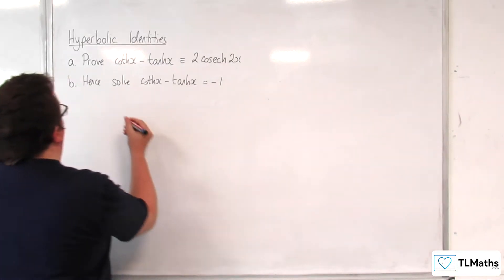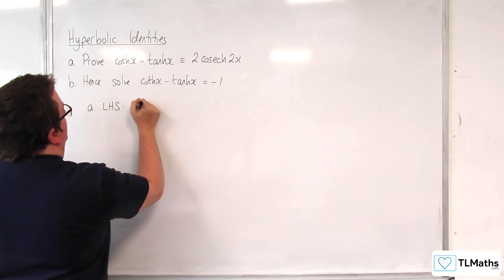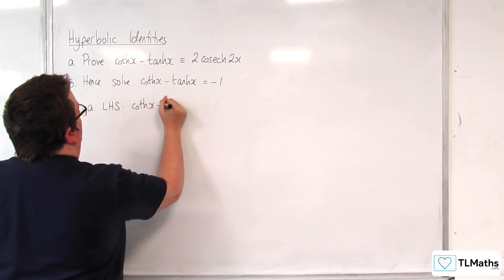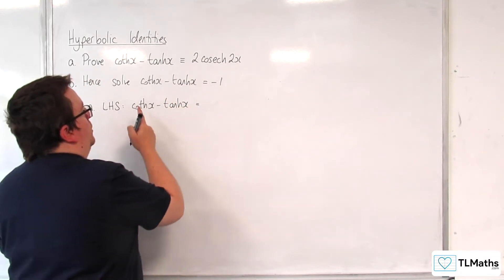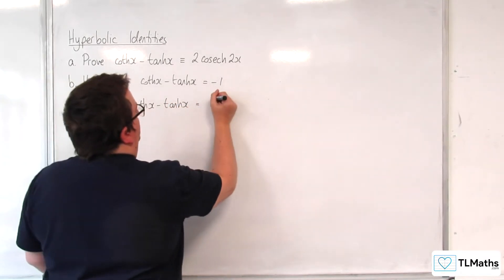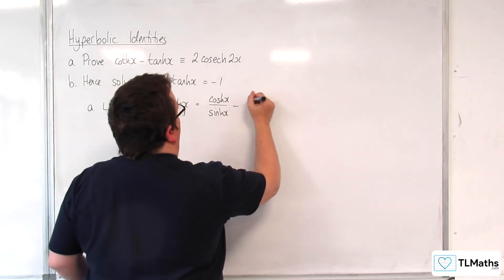Let's start with part A looking at the left hand side: coth x take away tanh x. So coth of x is going to be cosh x over sinh x, and here we've got sinh x over cosh x.